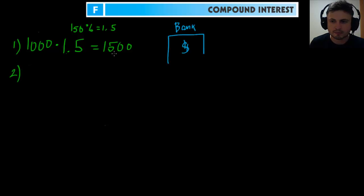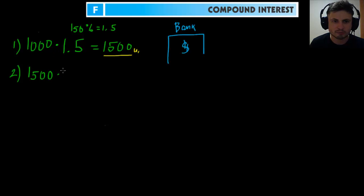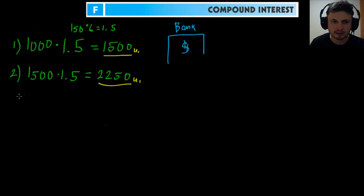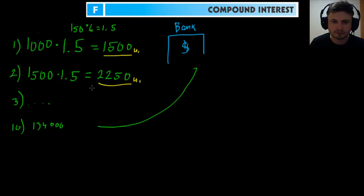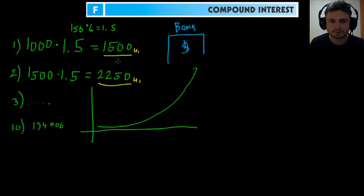After year two, in compound interest, you take the new balance and multiply by the interest rate again: $1,500 × 1.5 = $2,250. You keep multiplying each year for ten years until you get that huge number around $134,000. That's why it's so large — it's an exponential function. Plotted, it's y = 1000 × 1.5^x, and it grows very fast.